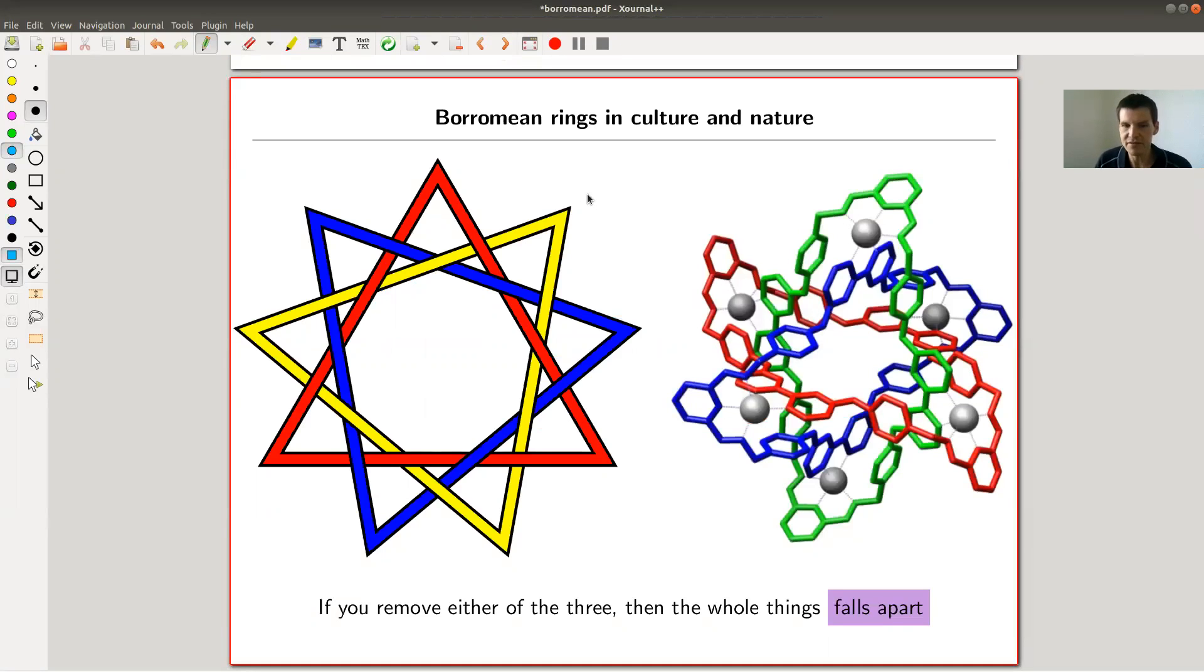So let's get started. The Borromean rings is a very simple idea. They appear everywhere throughout culture and nature. Throughout culture, like symbols like this, you have three components: a blue one, a red one, and a yellow one. The point is they are linked in a funny way.